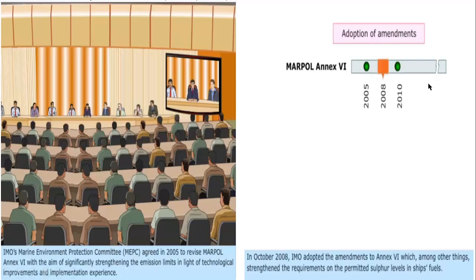The major amendments done in MARPOL Annex 6 were in 2005, followed by 2008, followed by 2010. The MARPOL amendment is done by the MEPC — the Marine Environmental Protection Committee. They amend Annex 6 when they feel there is a requirement to strengthen the emission limit and when there is a technological improvement needed in the shipping industry.